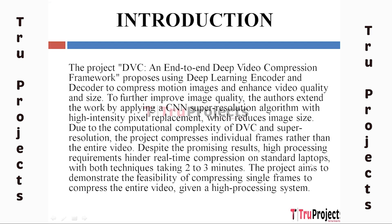The project proposes utilizing a deep learning encoder and decoder to compress motion images and improve video quality and size. It extends this work by employing a CNN super-resolution technique with high-intensity pixel replacement, which minimizes image size. The project compresses individual frames rather than the entire video due to the computational cost of DVC and super-resolution.